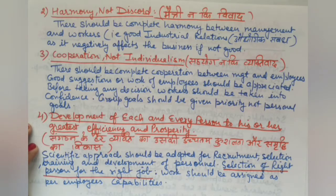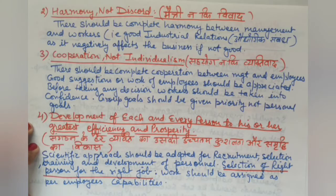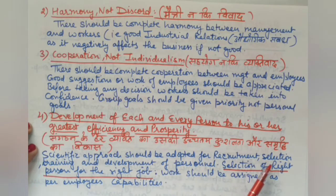If our workers are skilled and properly trained, we can do good work efficiently. If they are unskilled and untrained, our costs will increase and we will not be able to sustain the business in the long term. This is why a scientific approach should be adopted for recruitment, selection, training, and development of personnel.